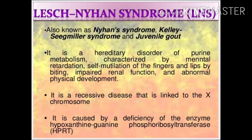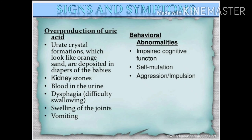Lesch-Nyhan syndrome is due to the deficiency of an enzyme known as hypoxanthine-guanine phosphoribosyltransferase (HGPRT), an essential enzyme involved in purine metabolism. Major symptoms include overproduction of uric acid, urate crystal formation deposited in diapers of babies, blood in urine, dysphagia (difficulty swallowing), and swelling of joints. Behavioral abnormalities include impaired cognitive function, self-mutilation, aggression, and impulsivity.